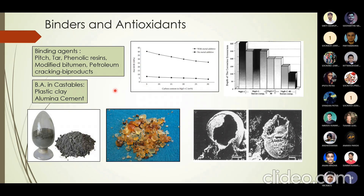Phenolic resins have good chemical affinity to graphite and disperse easily in the matrix phase. They also have good adhesive property to bind raw materials, prevent toxic gas evolution — releasing phenol instead of polycyclic aromatic hydrocarbons — and have a high fixed carbon content. These are the key advantages of phenolic resins as binding agents.